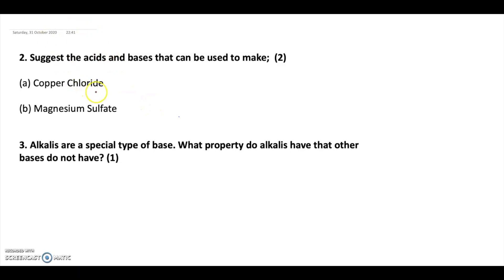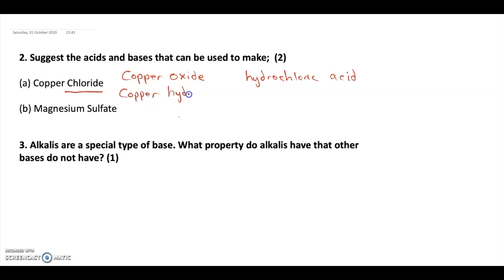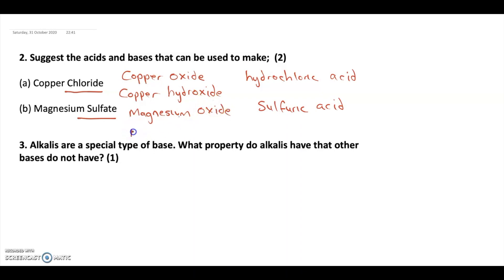Question two asks you to suggest the acids and bases that can be used to make copper chloride. Because it's copper chloride, you need hydrochloric acid, and the base could be copper oxide or copper hydroxide — you need a base containing copper. For magnesium sulfate, the acid is sulfuric acid, and the base could be magnesium oxide or magnesium hydroxide — you need a base containing magnesium. Remember bases are oxides or hydroxides of metals.